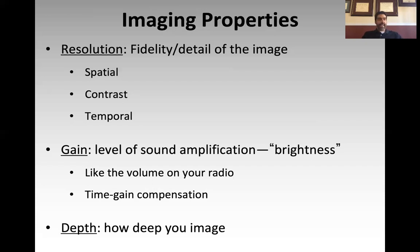It's important to remember that gain is largely subjective in nature — some people prefer a brighter image, others a darker image — but there are some objective criteria on how to set gain. In general, if you're looking at a fluid-filled structure, you want the gain set low enough that the fluid-filled structure appears anechoic or totally black on the screen, but high enough that you can differentiate the soft and connective tissue around it clearly. For example, if you're imaging the IJ for cannulation, you want the gain set low enough that the lumen of that vein appears black. If gain is set too high, that black lumen will appear whitish or grayish. At the same time, set the gain high enough that you can see the wall of the vessel around the lumen clearly.